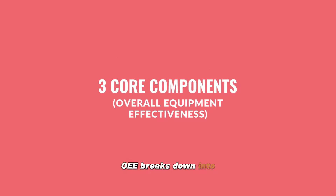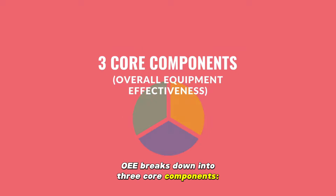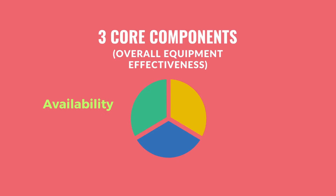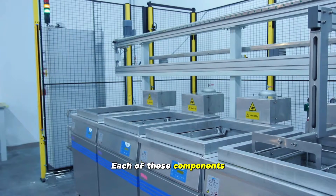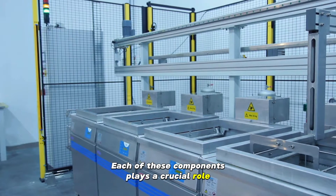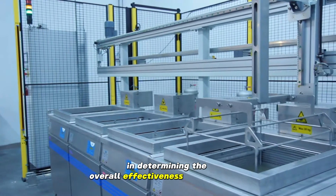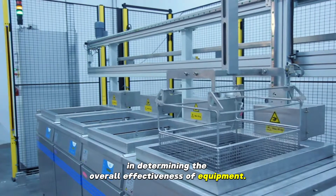OEE breaks down into three core components: availability, performance, and quality. Each of these components plays a crucial role in determining the overall effectiveness of equipment.